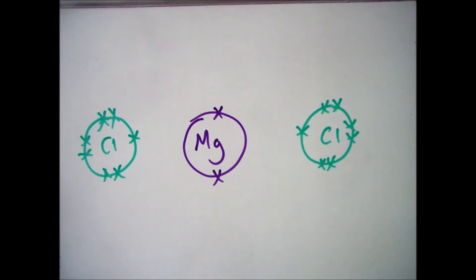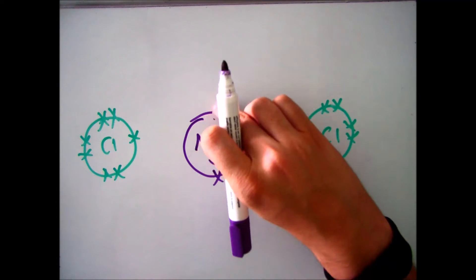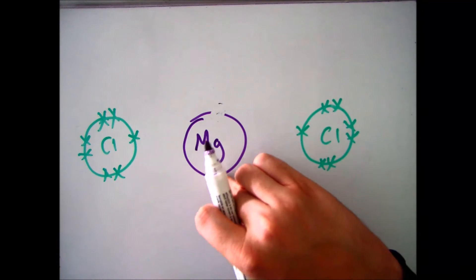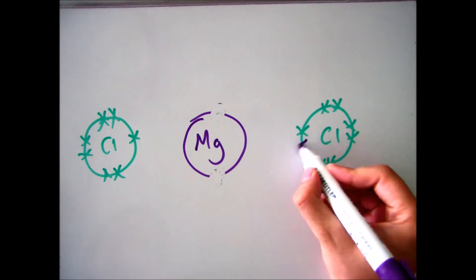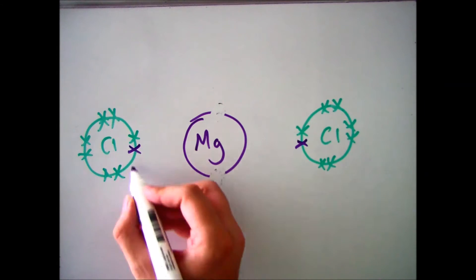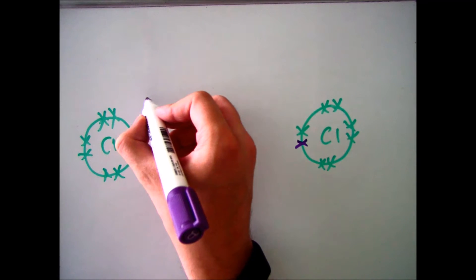Now, what we've just done is to actually draw the bonding, but what you need to be able to do is draw the actual ionic bond itself. So what you do is, now you've figured out you've got two chlorines and one magnesium, draw the electronic configurations again, rub out the charges and put them all in the electrons in the correct place.